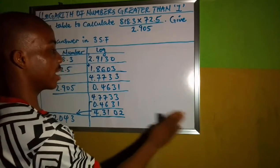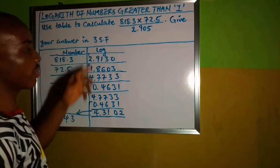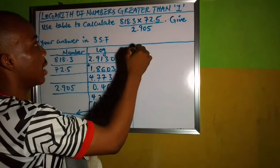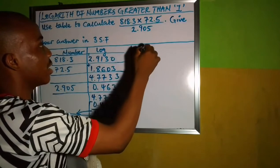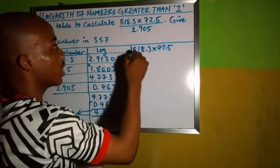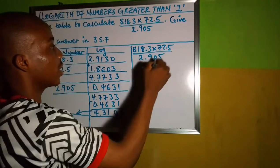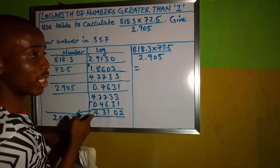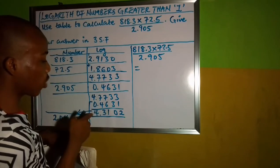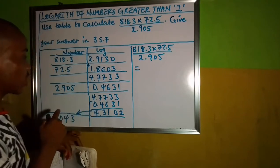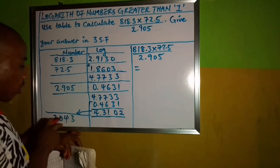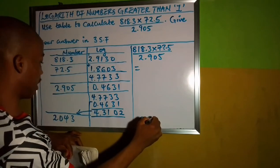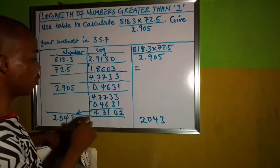Now, we are not done yet. We need to write the final answer and express in 3 significant figures from the question. That then means that 818.3 times 72.5 divided by 2.905 will give us what? We are going to add 1. Remember, we skipped this whole number here to check the antilogarithm. So we are going to add 1 here. It will become 5.